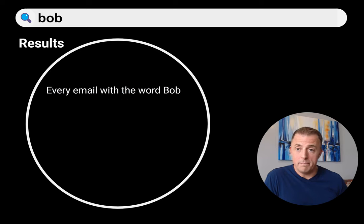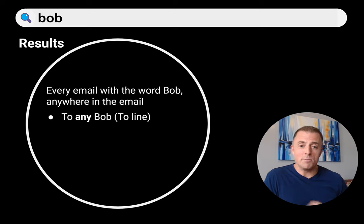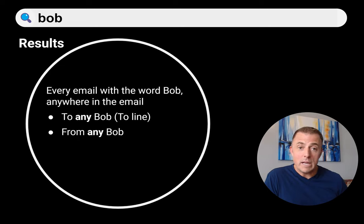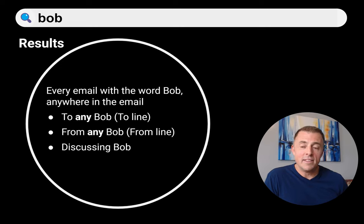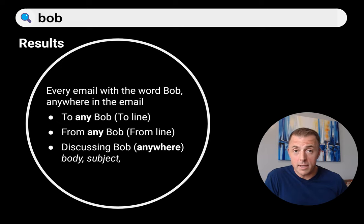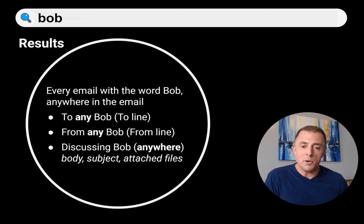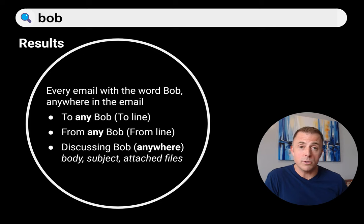Every email with the word Bob anywhere in the email — to any Bob, from any Bob in the "from" line, any email discussing any Bob — they're all in this circle. This also includes Bob anywhere in the email: the body, the subject line, or in any attached files. So any emails with a spreadsheet attached with the word Bob in the spreadsheet — all those results are right here in this circle. This is why this is a very wide search term and your results are unlimited.